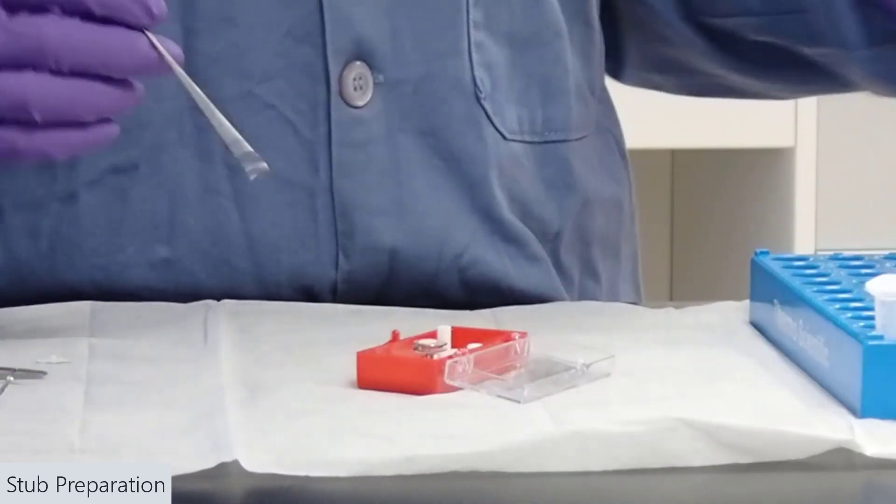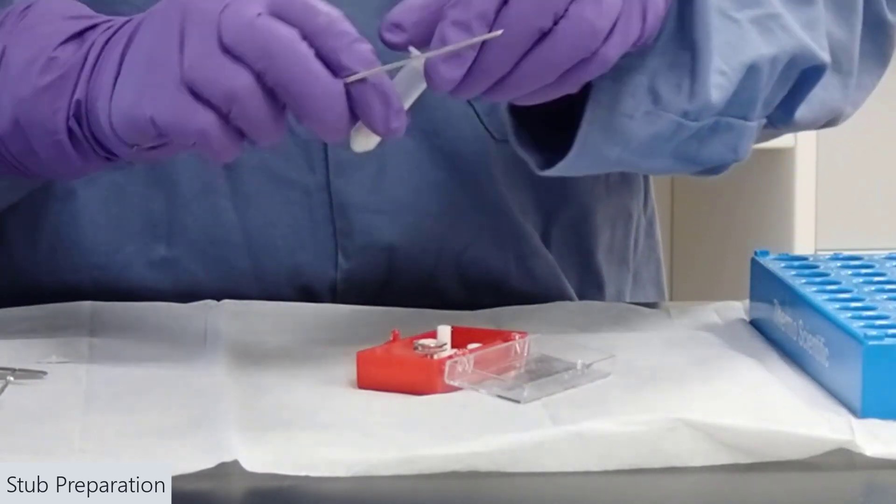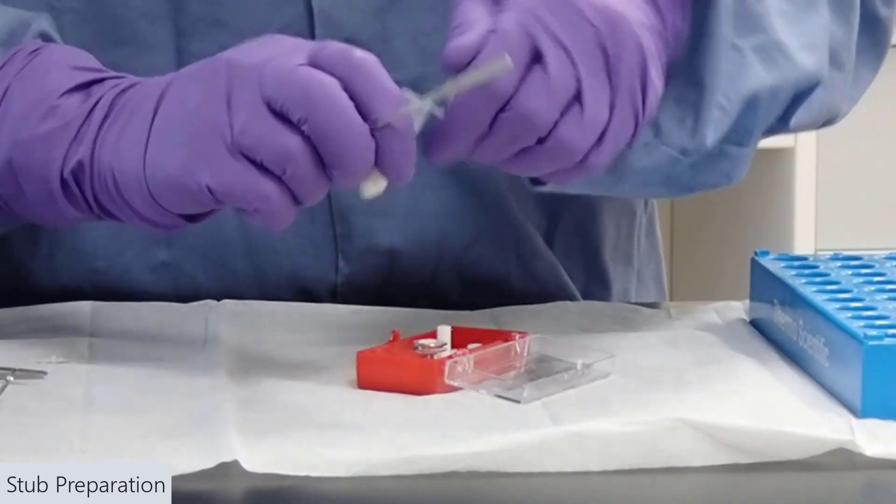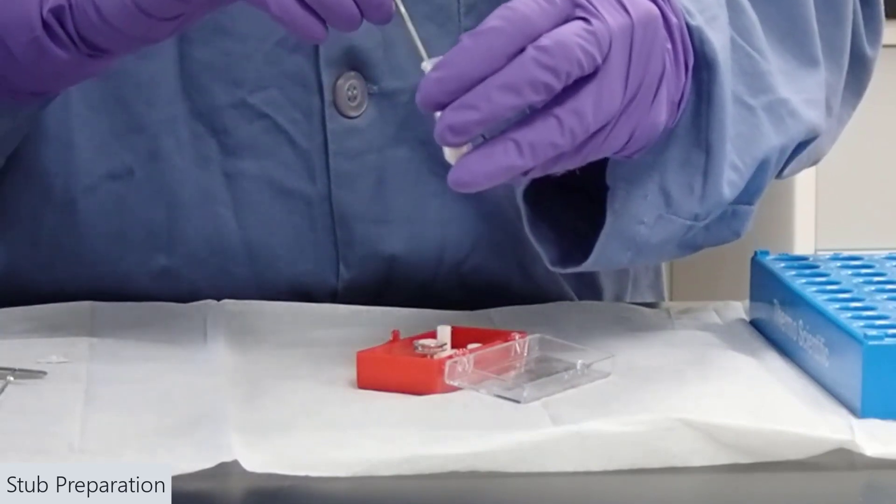Next, we're going to use the scoop to take a small amount of powder and put it on the double-sided tape. Smaller is better in this case.